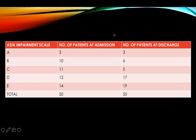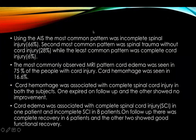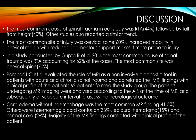The distribution of patients according to the AIS at admission and discharge showed that the most common pattern was incomplete spinal injury, second most common was spinal trauma without cord injury, and least common was complete cord injury. Cord edema was the most commonly observed MRI pattern, seen in 75% of patients. Cord hemorrhage was seen in 16.6% and was associated with complete spinal cord injury in both subjects — one expired and the other showed no improvement. Cord edema was associated with complete injury in one patient and incomplete in eight; on follow-up, six had complete recovery and two showed good functional recovery.